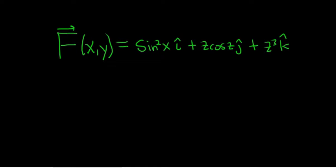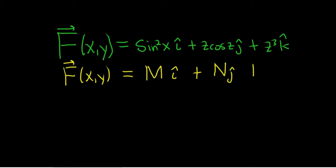Hi YouTube, in this problem we're going to find the divergence of this vector field. When you have a vector field written in the form F(x,y) equals M i-hat plus N j-hat plus P k-hat,